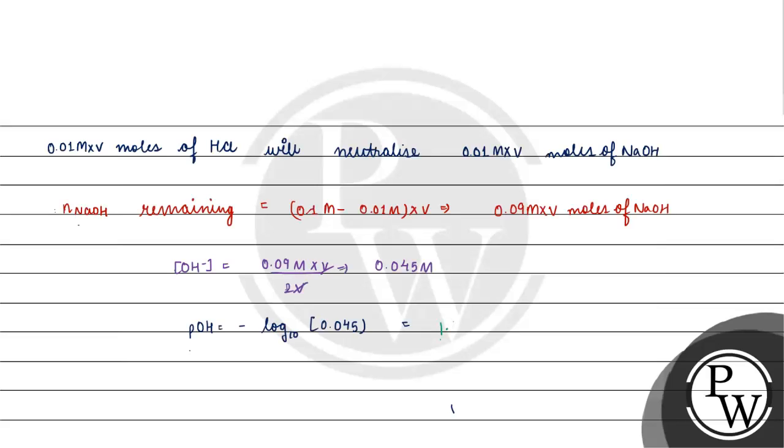We know pH plus pOH equals 14, so pH will be 14 minus 1.35, which gives us 12.65.